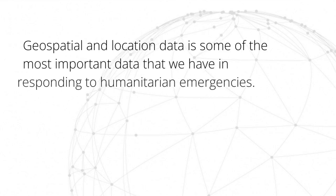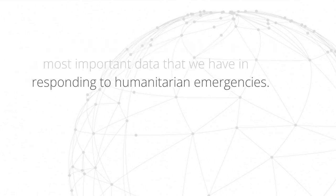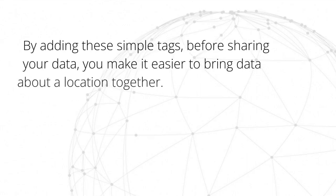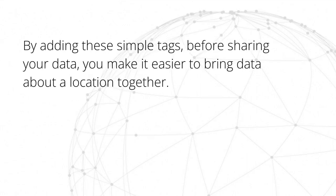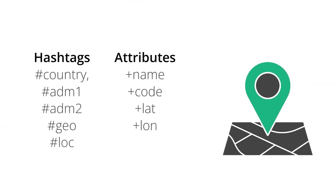Geospatial and location data is some of the most important data that we have in responding to humanitarian emergencies. By adding these simple tags before sharing your data, you make it easier to bring data about a location together. Let's quickly summarize the core hashtags used to describe locations.